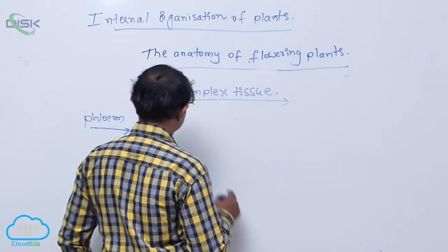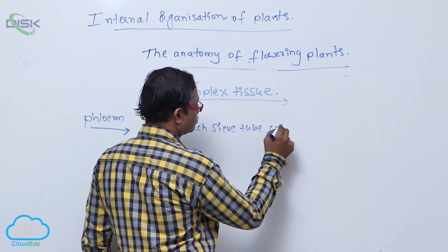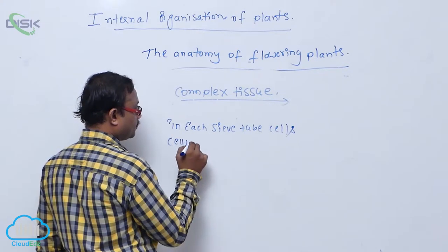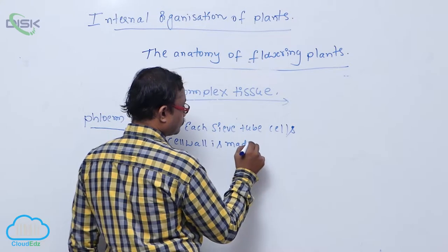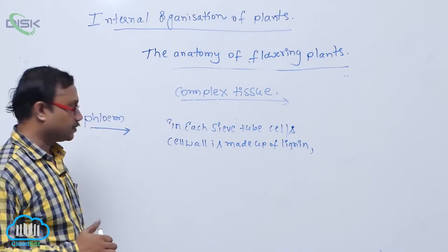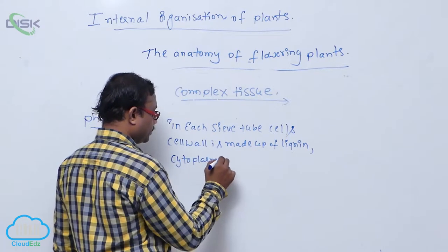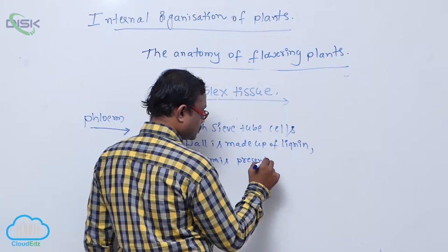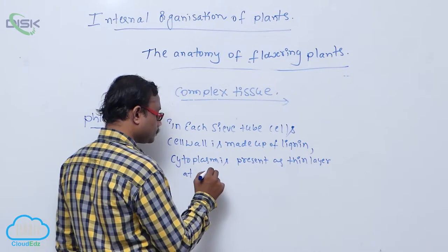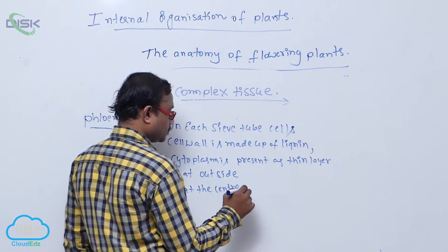In each sieve tube cell, the cell wall is made up of lignin. Cytoplasm is present as a thin layer at the outside. At the center, a large vacuole is present.